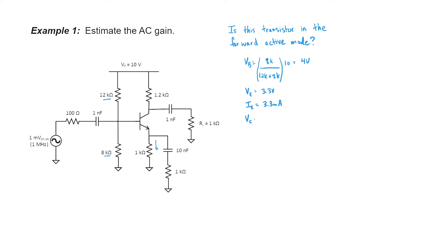I can now find my collector voltage. It's going to be 10 minus my collector current, which I'm estimating to be roughly my emitter current, times 1.2 kilohms. That works out to be about 6 volts. It's in the forward active mode if my collector voltage is higher than my base voltage, which is higher than my emitter voltage. These voltages nicely progress from high to low, so yes, my transistor is indeed biased in the forward active mode.